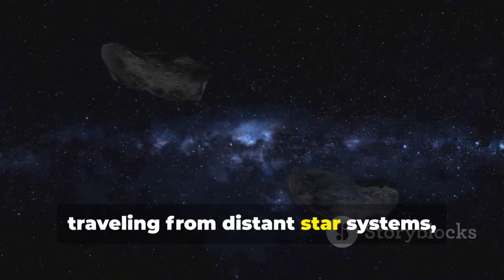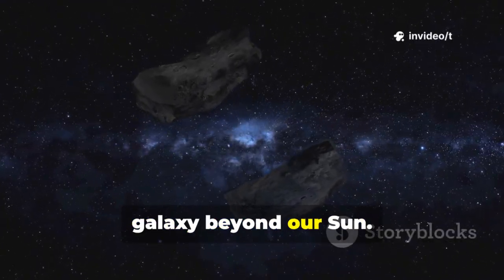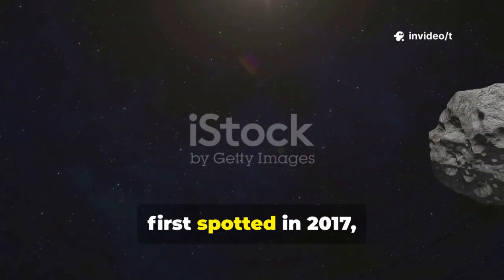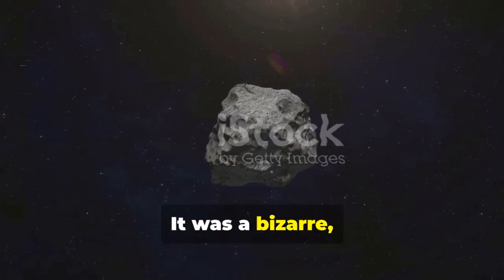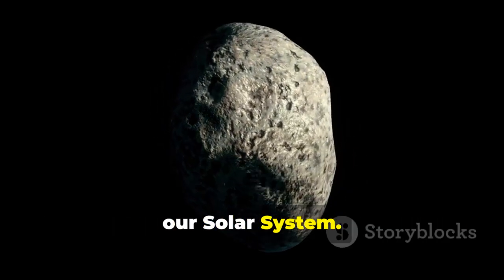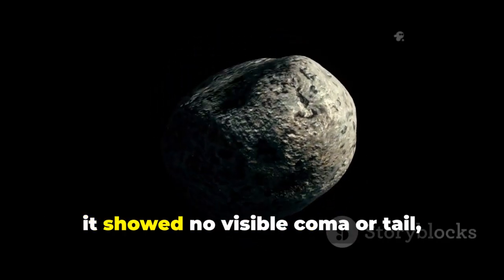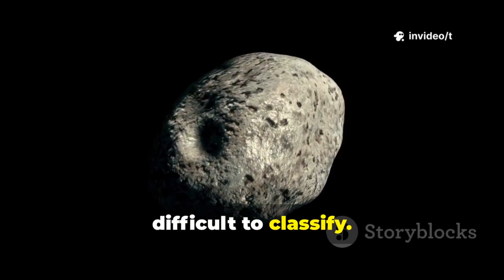These objects traveling from distant star systems offered us rare glimpses into the wider galaxy beyond our sun. Oumuamua, first spotted in 2017, was unlike anything we'd ever seen. It was a bizarre, elongated object tumbling end over end as it sped through our solar system. Unlike comets, it showed no visible coma or tail, making it even more mysterious and difficult to classify.